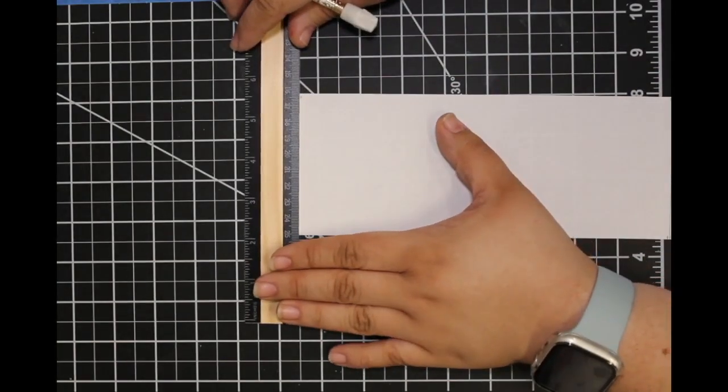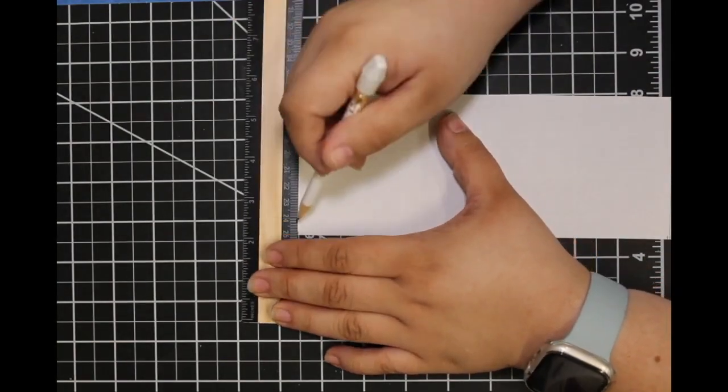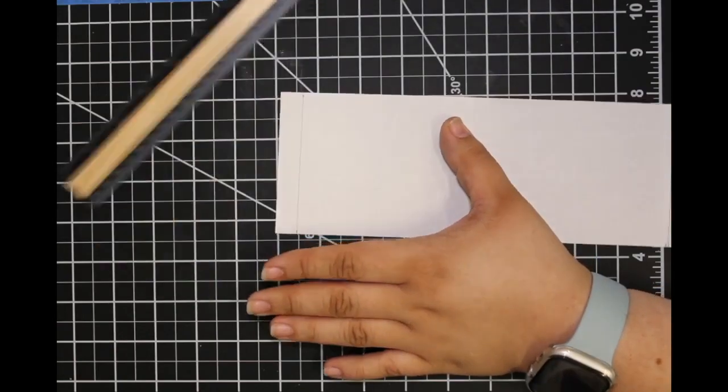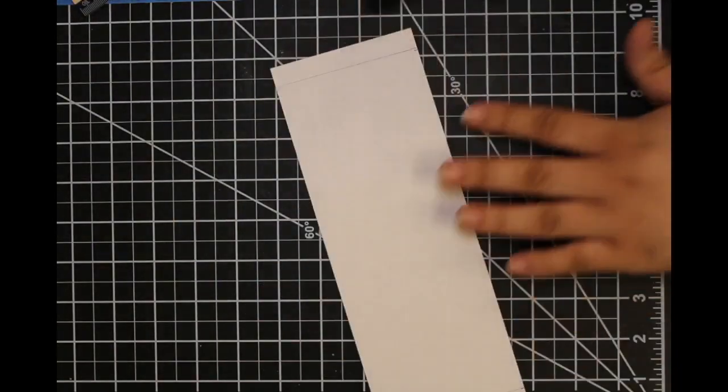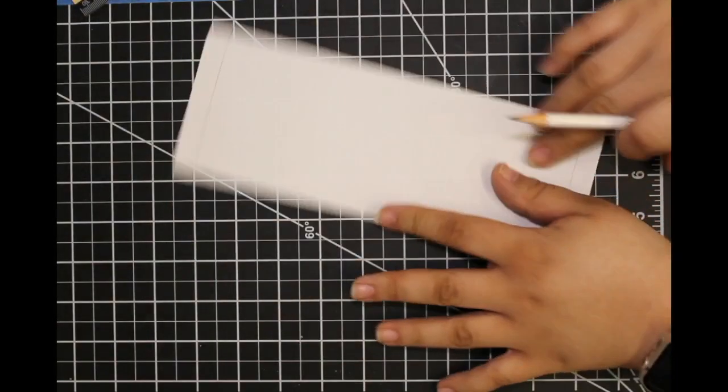Before you begin to use the markers, make sure you are working on a cutting mat or using a scrap piece of paper under the paper template as the inks will bleed through to the back of the paper.